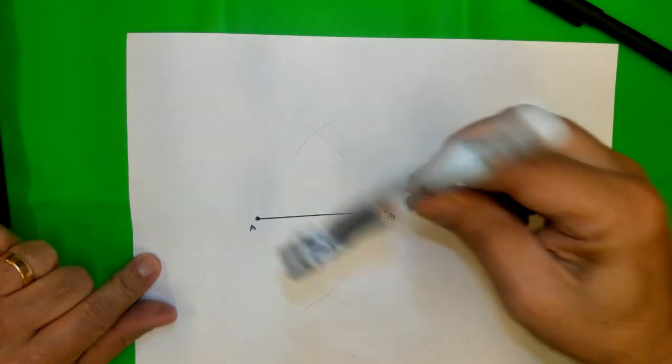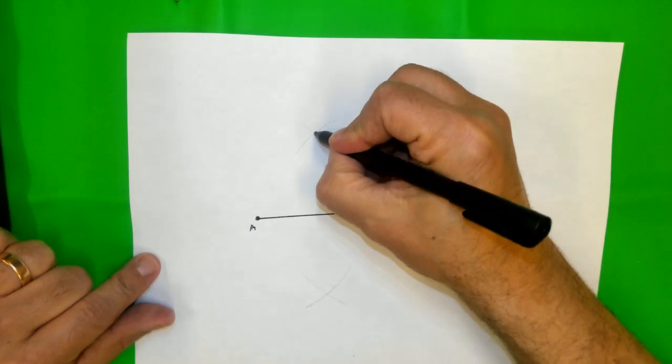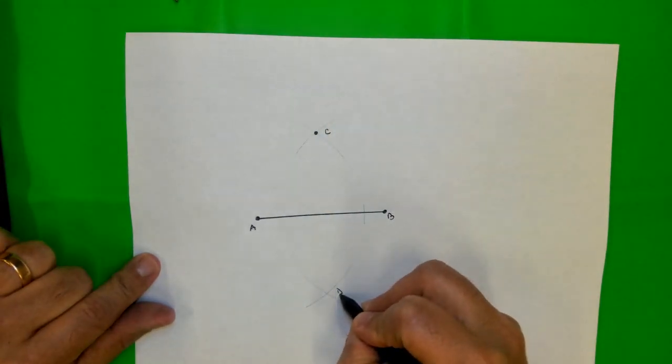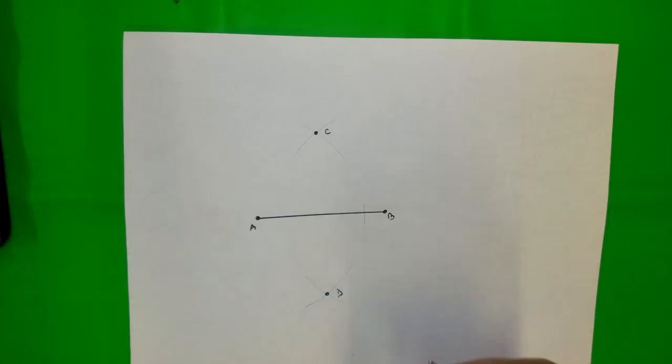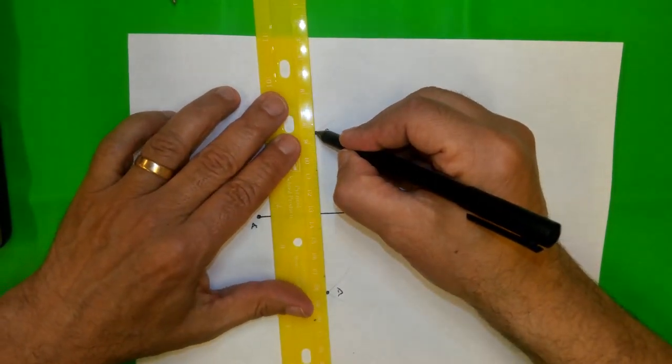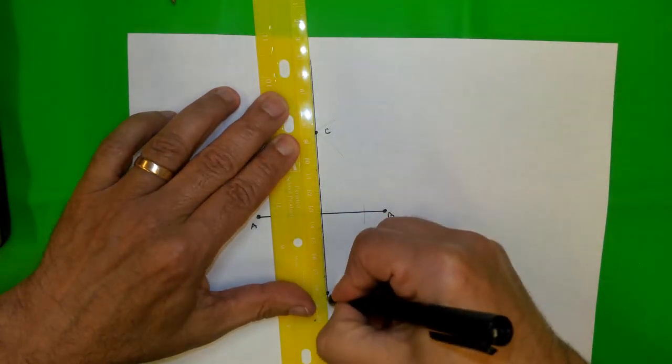And you notice we have two points. I'm going to call it point C, point D. If I connect these two points, which I will do now with my straight edge, I have line CD, which is the perpendicular bisector on the segment AB.